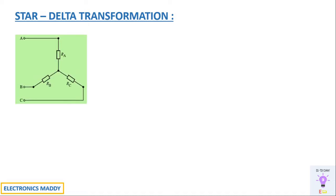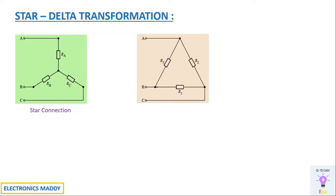Three resistances are said to be connected in star if one end of each is connected to a common point. One of the easiest ways to remember it is that it resembles an inverted Y shape. That is a very important observation with respect to star configuration.